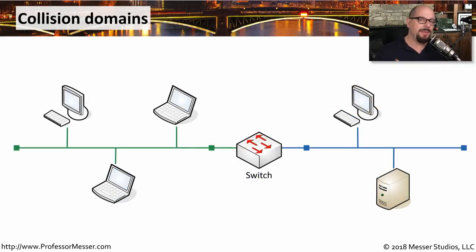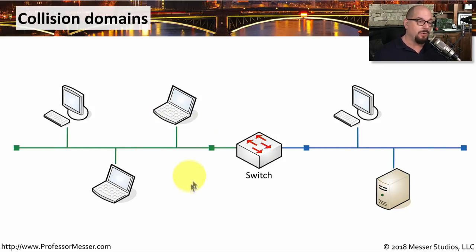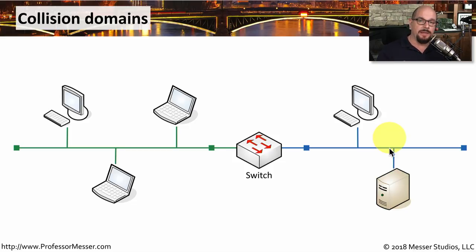The only way to segment out these different networks, or segment out these collision domains, was to put a switch or a bridge in the middle of the communication. With a switch in the middle, everyone on one side of the network would be one collision domain, and everyone on the other side would be a different collision domain. This meant that as our networks grew larger and larger, we could continue to segment them to limit the impact collisions would have on a particular group of devices.